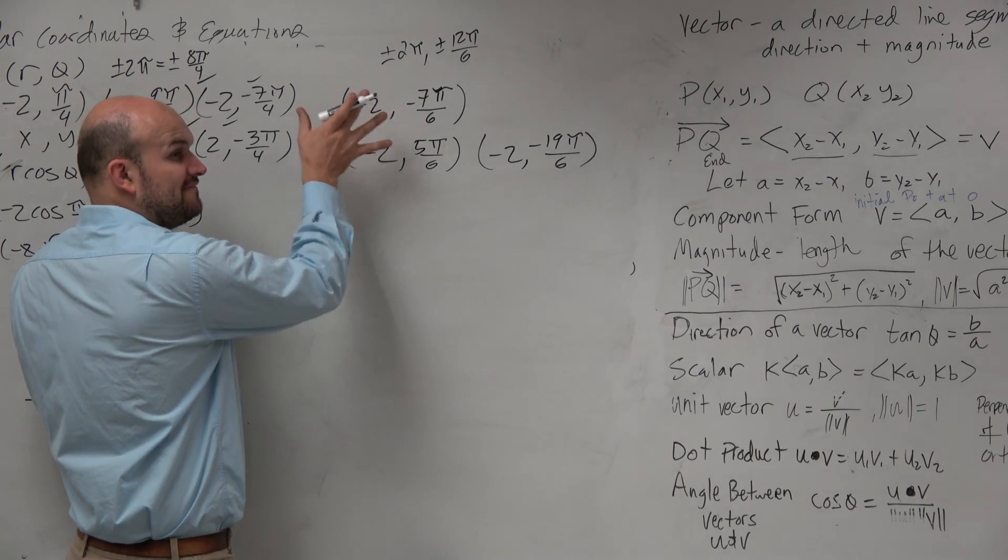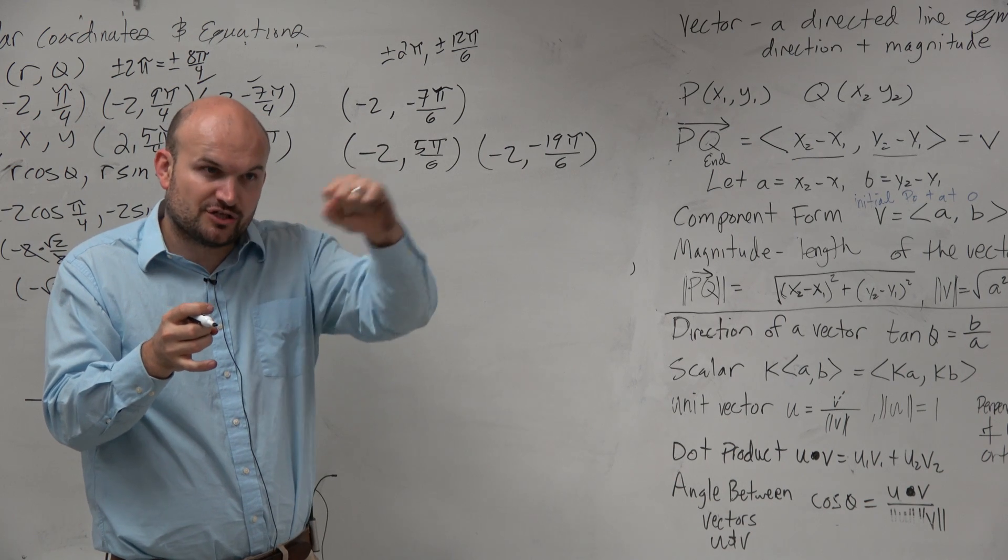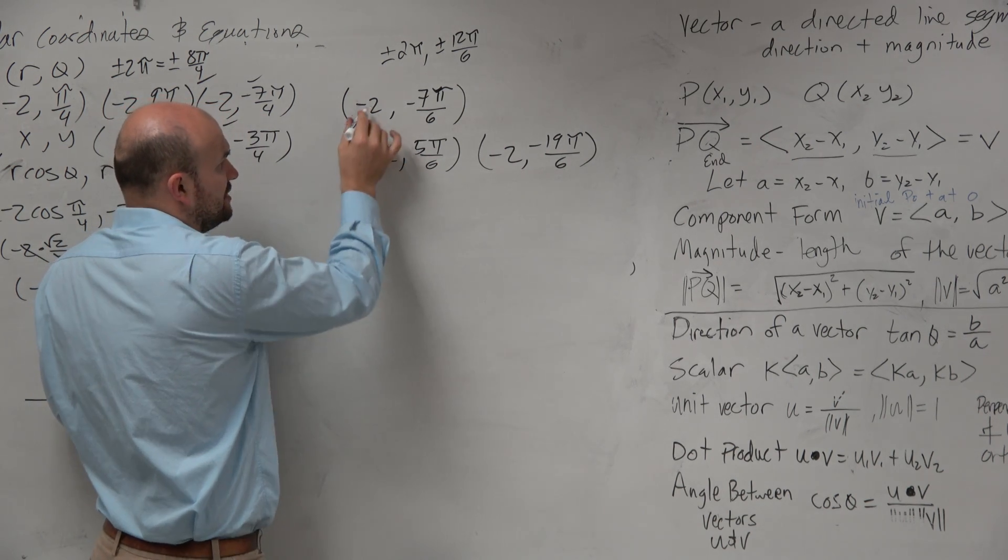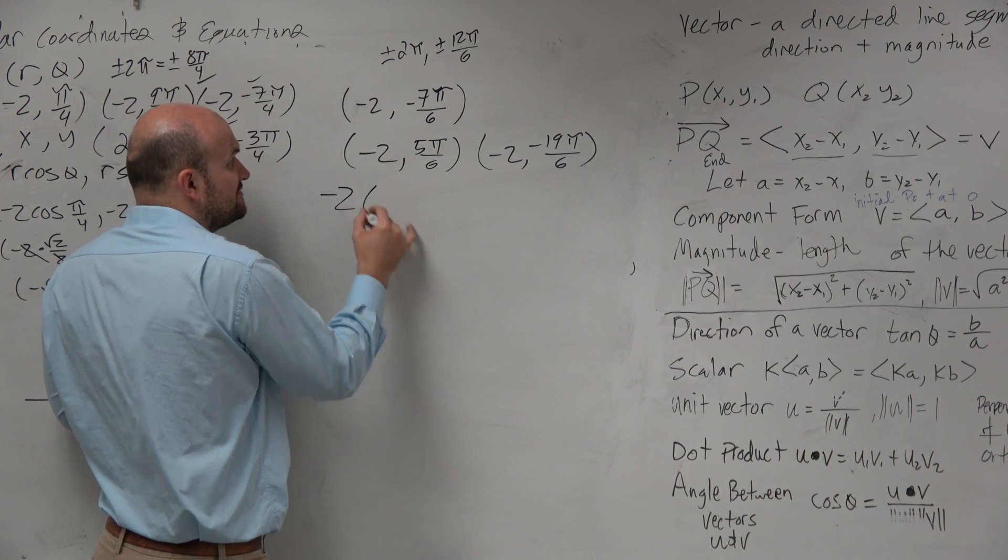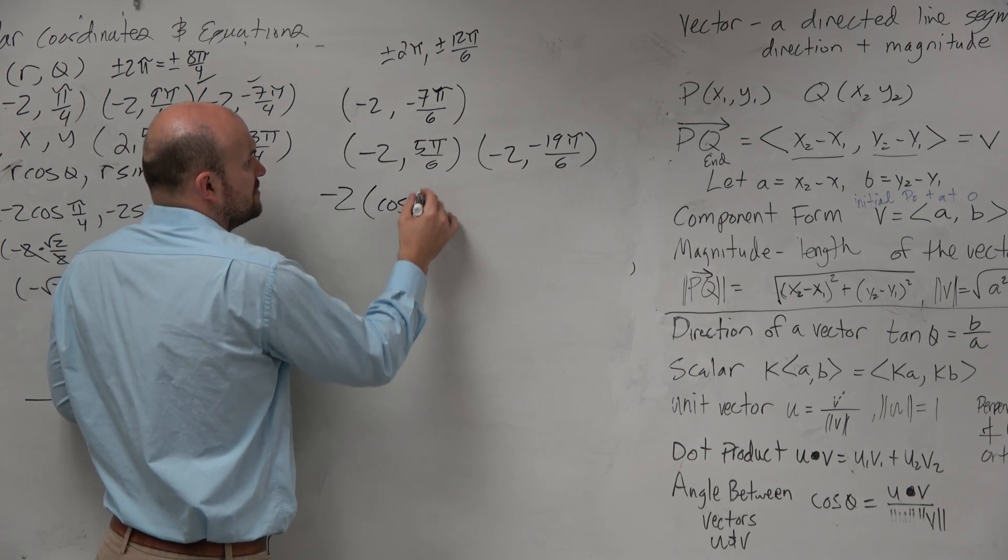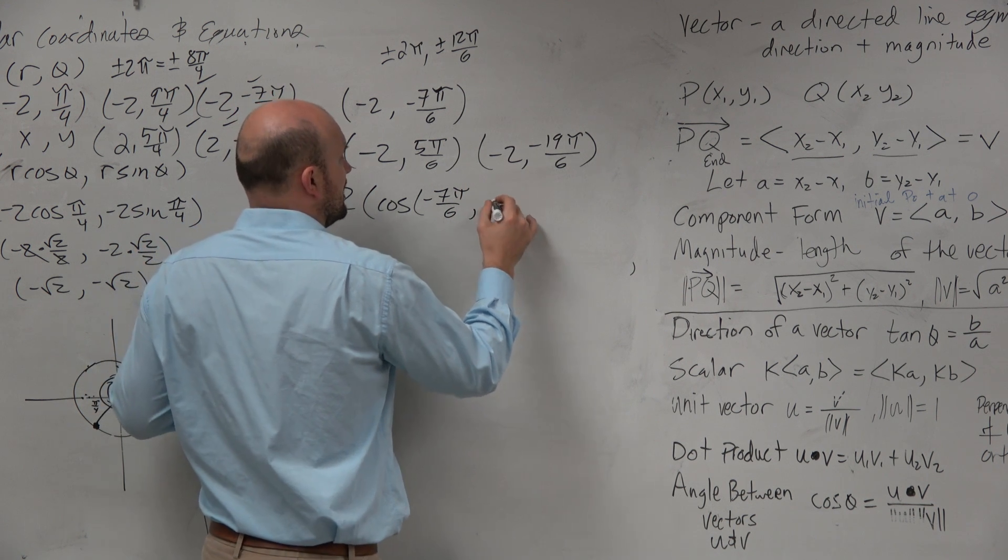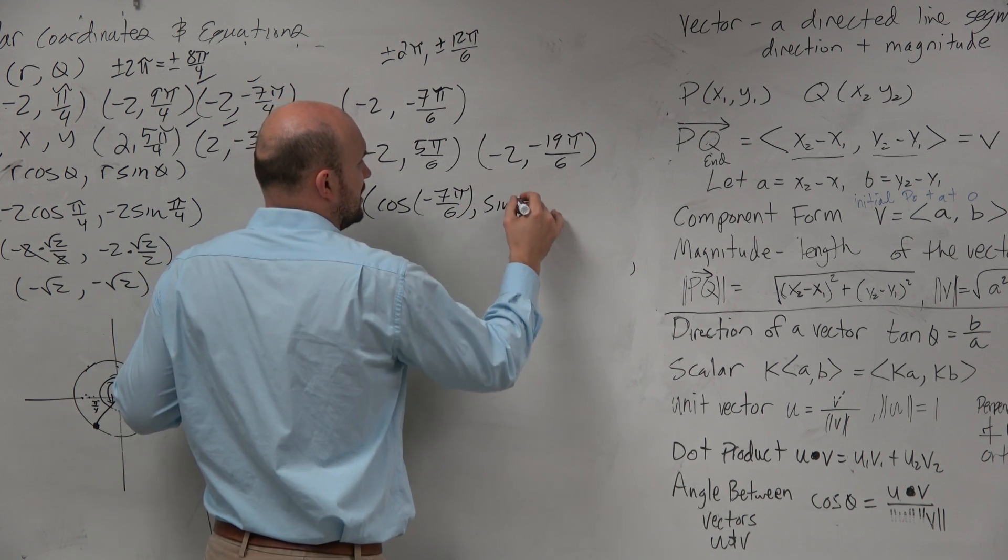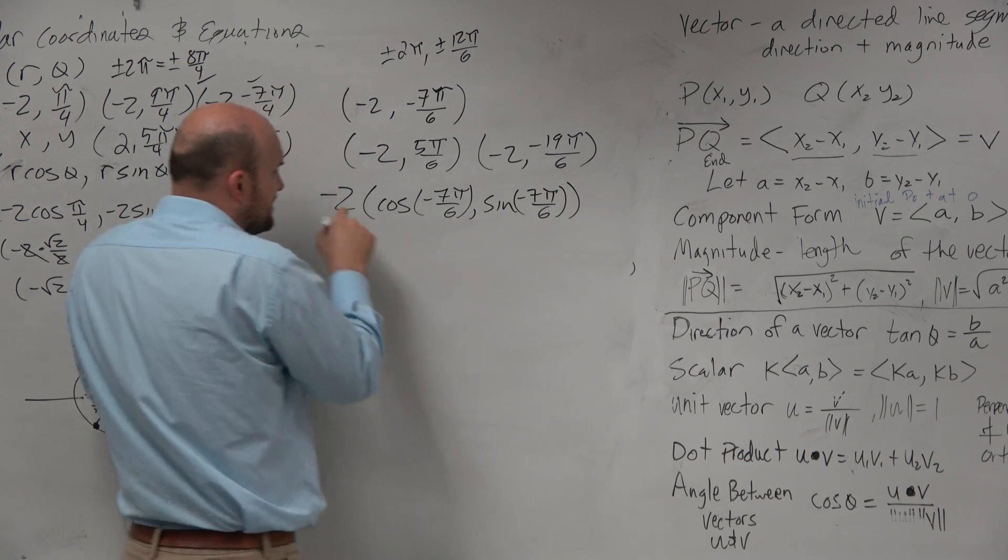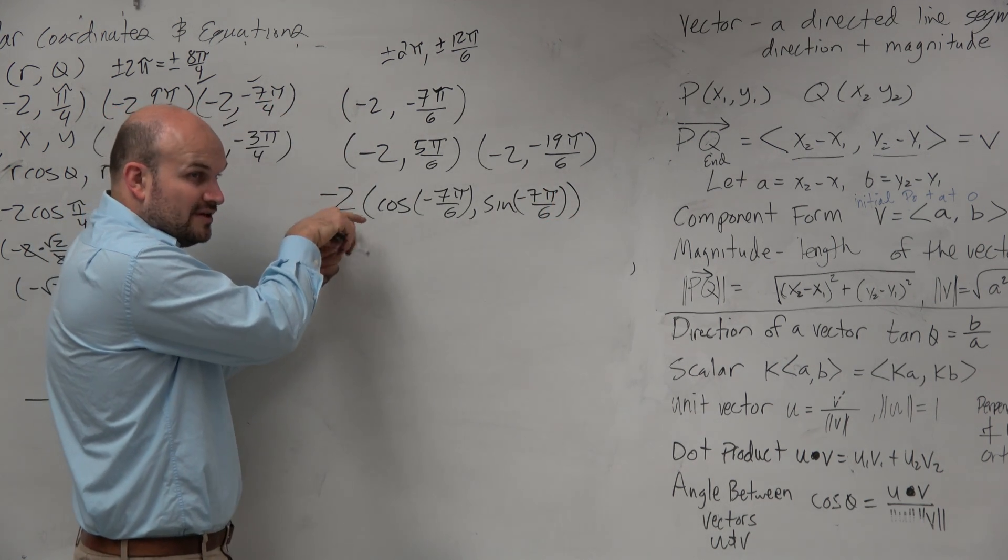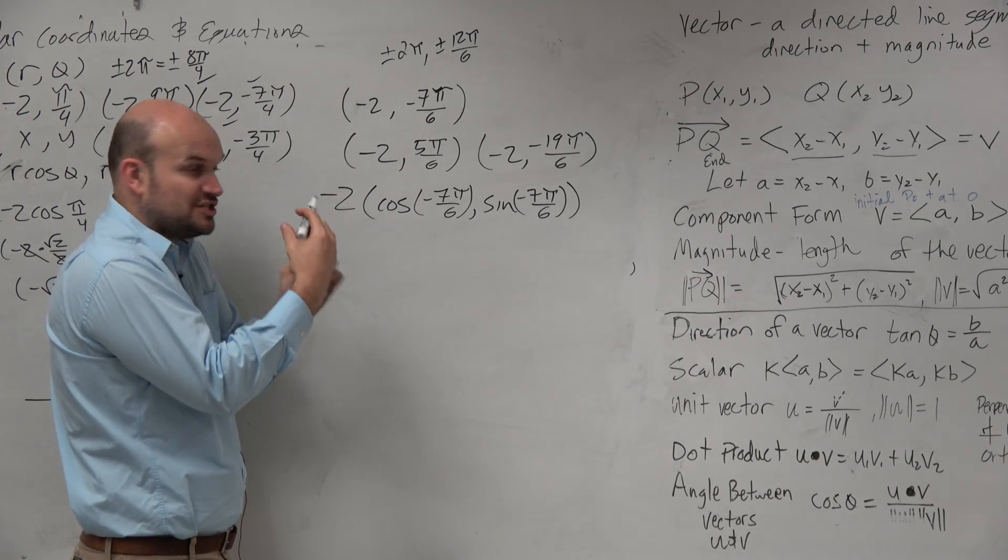Now if I want to graph this, I explained last time why that reflection works. Because when you multiply this negative, remember guys, this is like a negative 2 outside of cosine negative 7π over 6, minus comma sine of negative 7π over 6. So what's happening is when you have the radius as negative, the radius is not changing, but that negative is changing the direction.